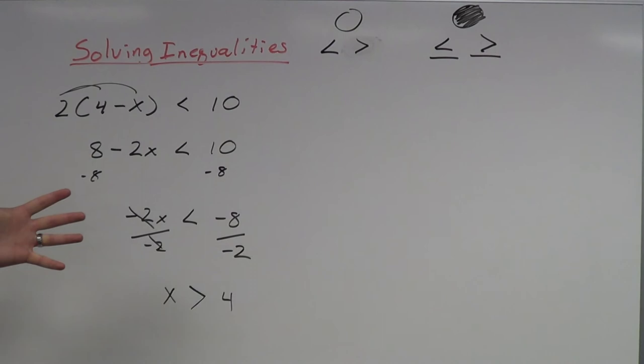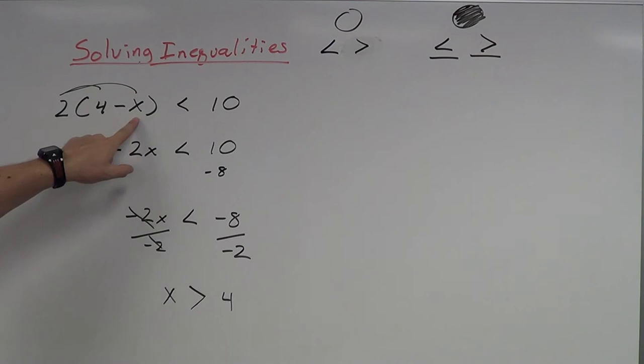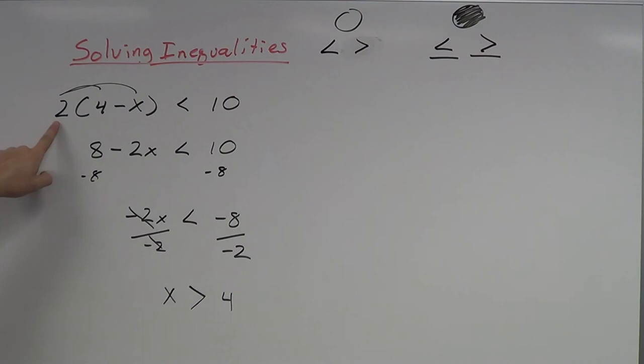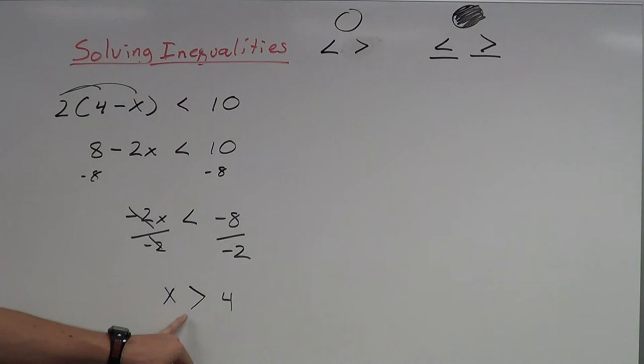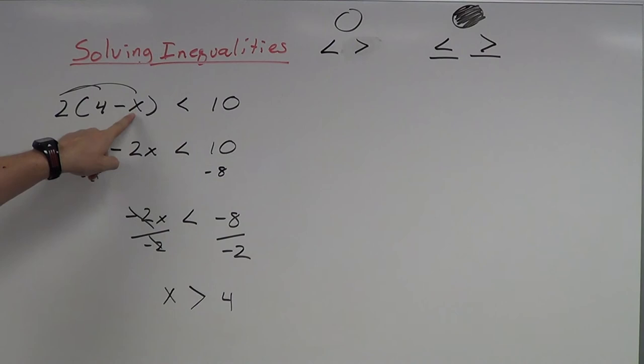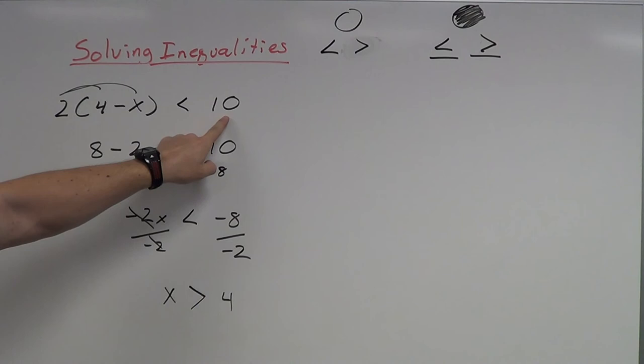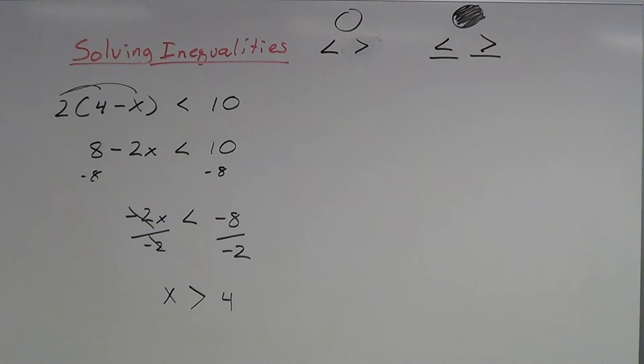What's a number bigger than 4? Let's use 5. Plugging back in: 4 minus 5 is negative 1, negative 1 times 2 is negative 2. Negative 2 is in fact smaller than 10 — it works. I can keep choosing numbers bigger than 4: 5, 6, 7, 8, 9, 10. What about 10? 4 minus 10 is negative 6, negative 6 times 2 is negative 12. Negative 12 is smaller than 10 — that works too. With these inequalities, we're not just getting one answer — we're getting many, many answers.